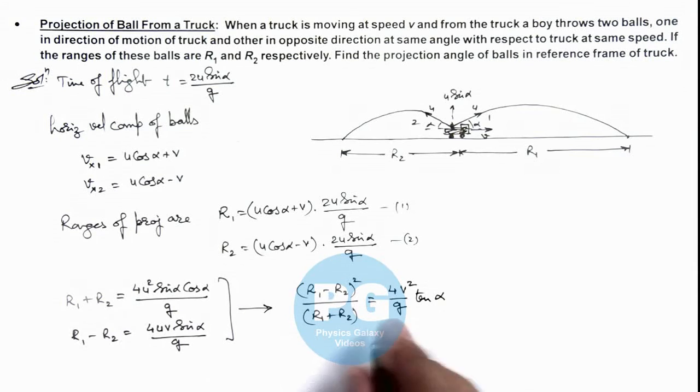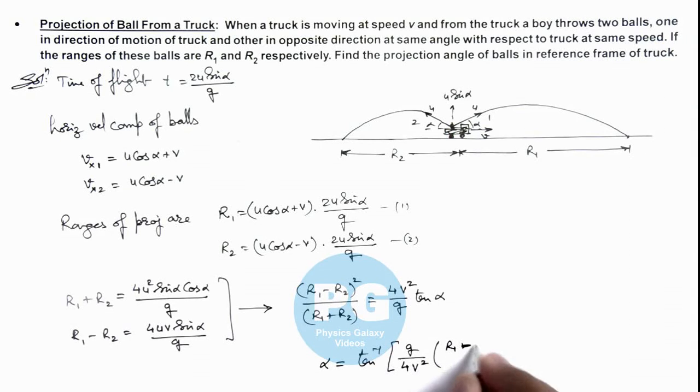And from here you can get the angle of projection alpha, which is equal to tan inverse of g by 4v squared, r1 minus r2 whole square divided by r1 plus r2. So this would be the final result for the angle of projection of these balls in terms of the truck speed and the two ranges r1 and r2.